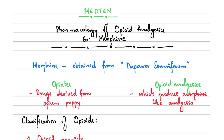Welcome to Med 10. In this video we are going to look at the pharmacology of opioid analgesics, for example morphine. We will begin with morphine.